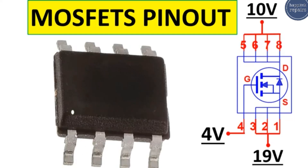For every eight-pin MOSFET, the first three pins — pin number one, two, and three — are connected together and are the source. The fourth pin is the gate. The other four pins are the drain. As you can see in the circuit diagram, pins one, two, and three are connected together as source, pin four is the gate, and the remaining four pins connected together are the drain.